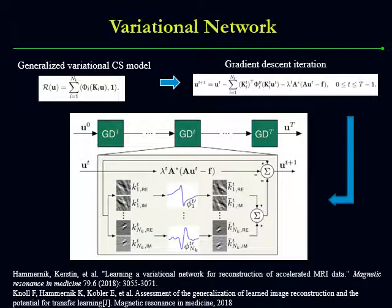The first example shows the work of variational network. It is targeted to solve a generalized variational energy model. They derive the iterative update rule for the image using gradient descent algorithm. Then the steps of iterations are unrolled into learning a variational network. To obtain a reconstruction, they fit the under-sampled k-space data, sensitivity maps, and zero-filled solution to the learned variational model.